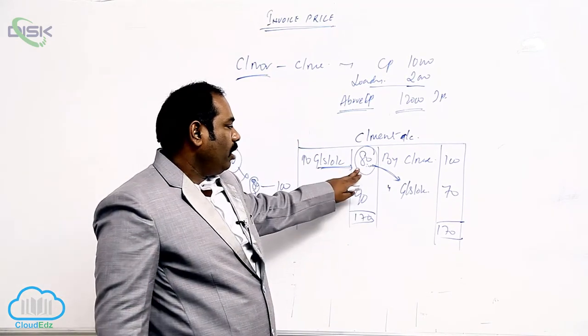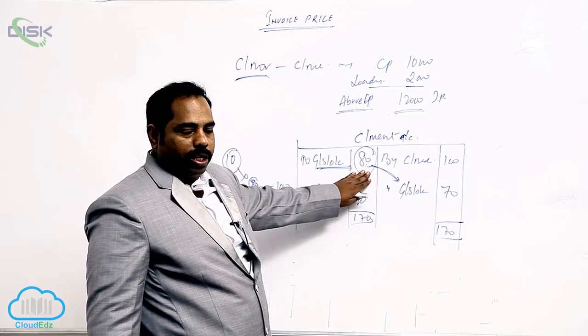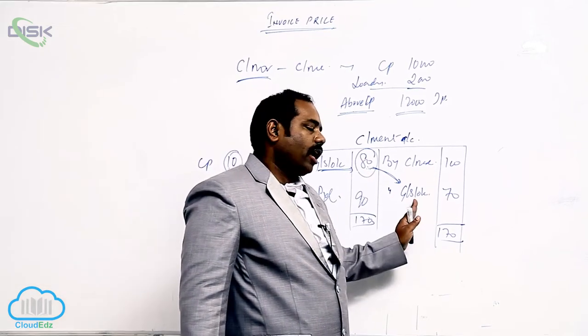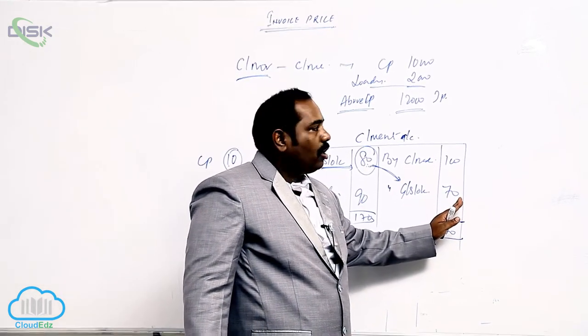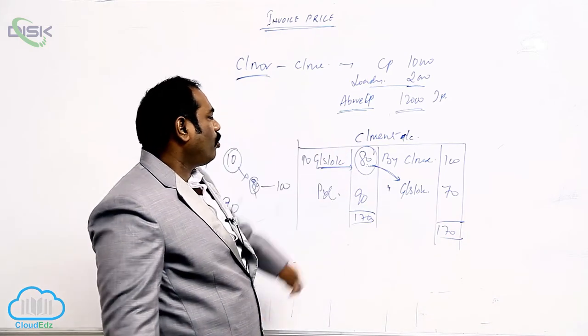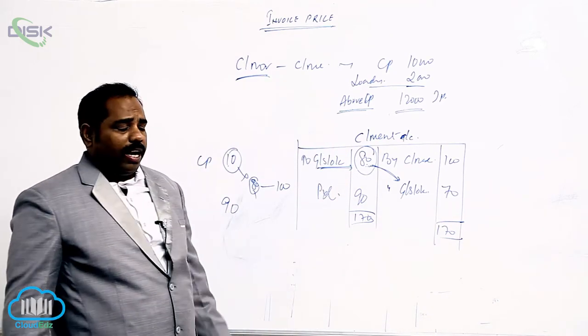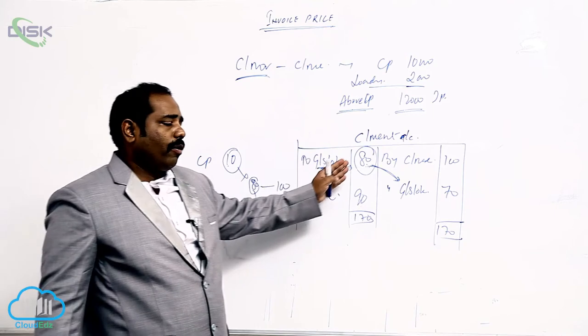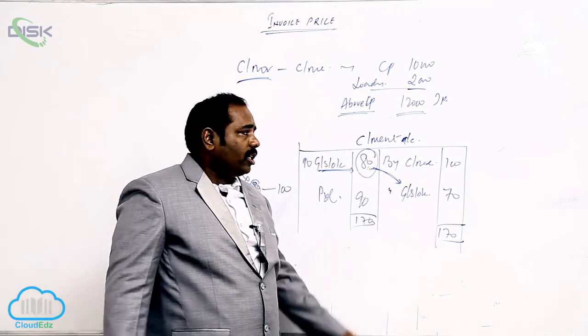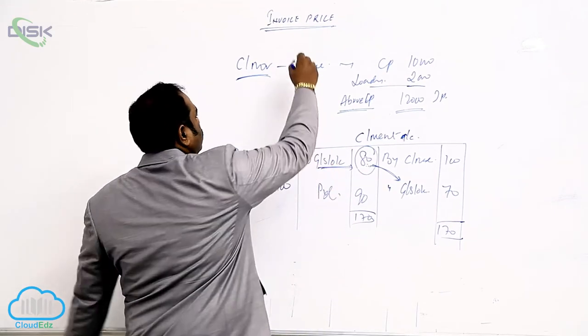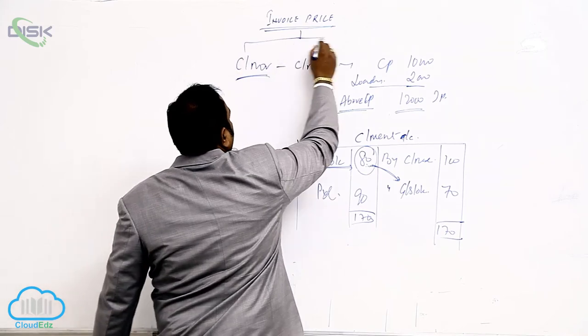This is called loading. Whatever extra price you are adding, that is called loading. And whenever you are unloading it, write it on the credit side. When do we have to do the unloading part? Whenever we add extra price, we have to unload it. This will be done in two cases. Unloading has to be done in two cases.